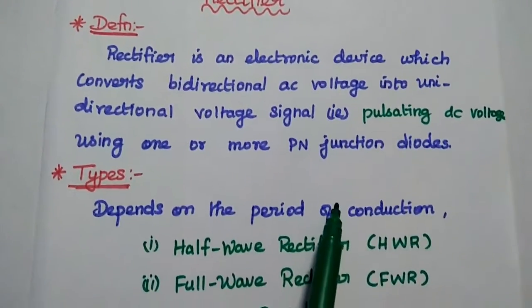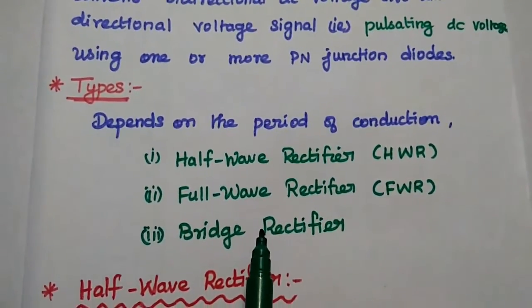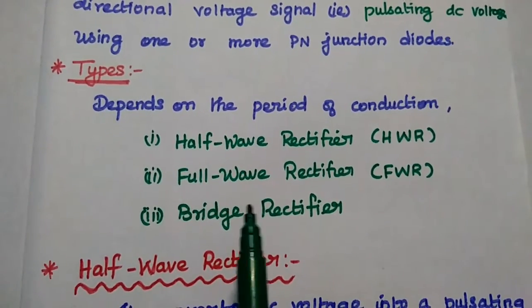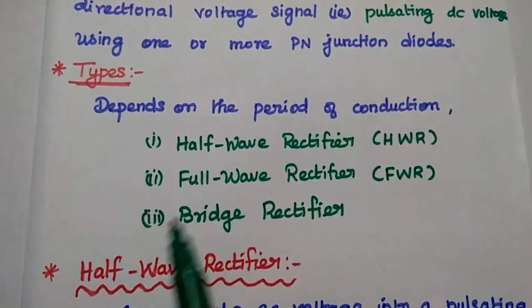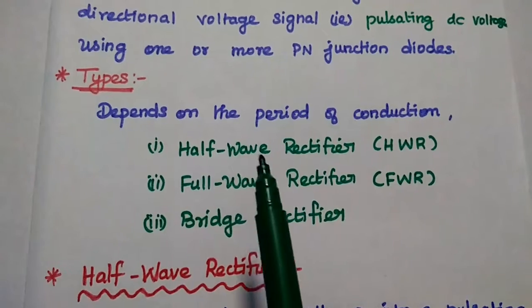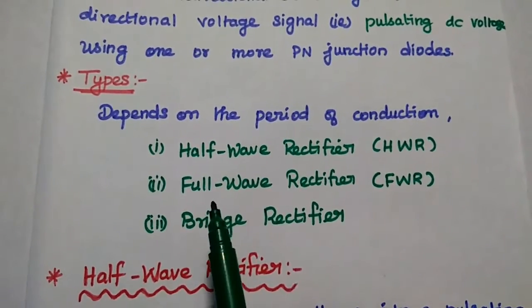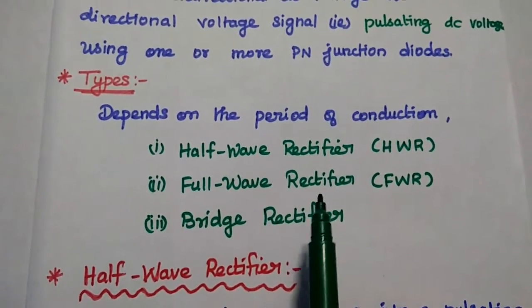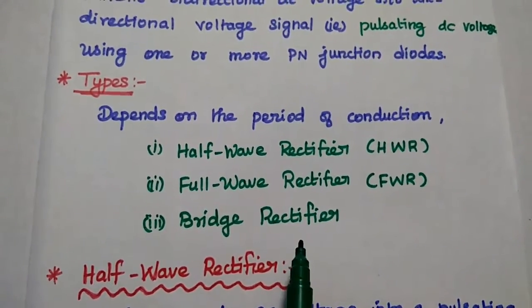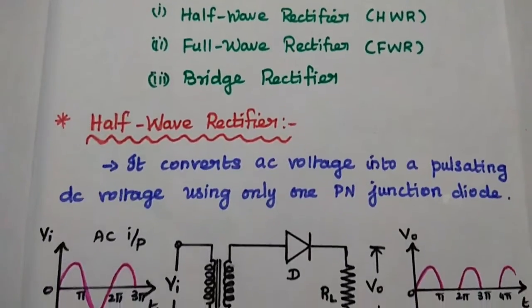The next topic is types of rectifiers based on the period of conduction of the circuit. Rectifiers can be classified into half wave rectifier, full wave rectifier, and bridge rectifier. Let's discuss each type.